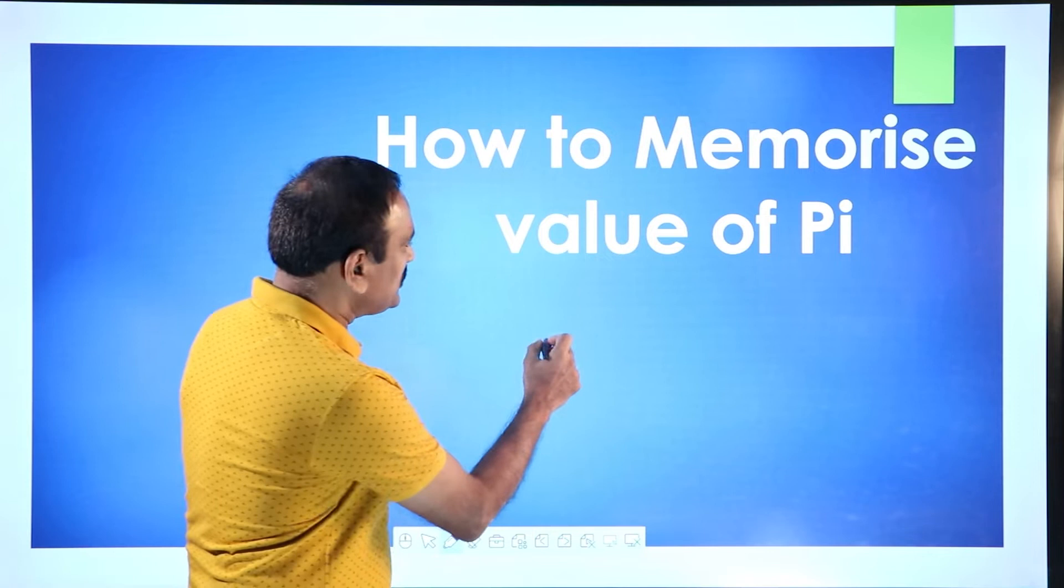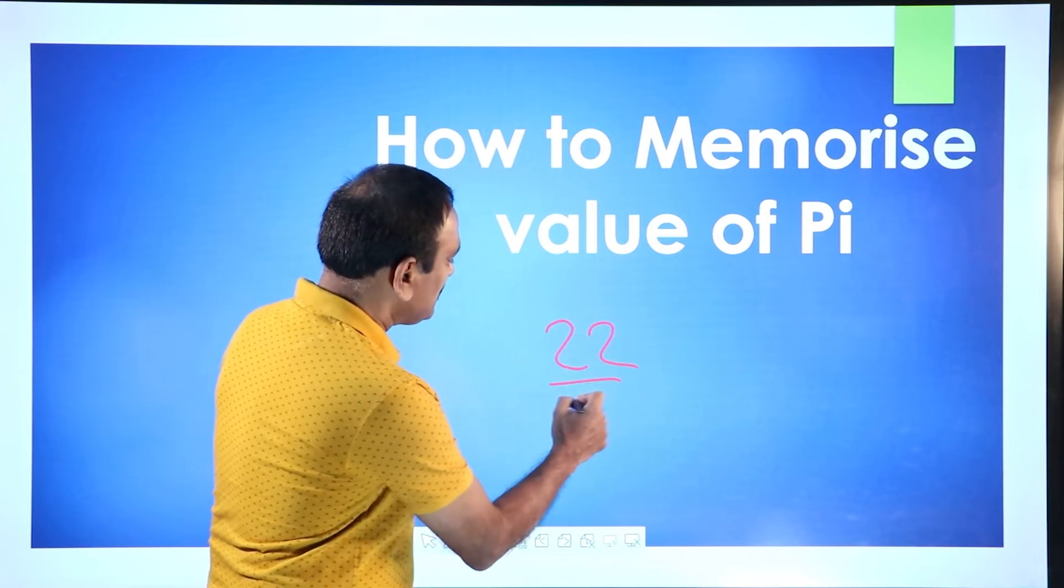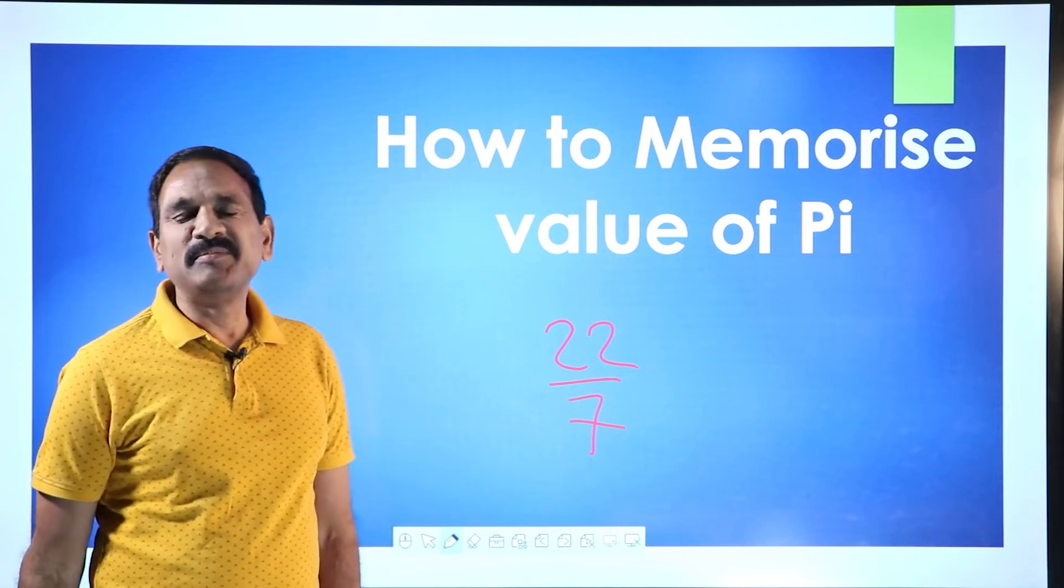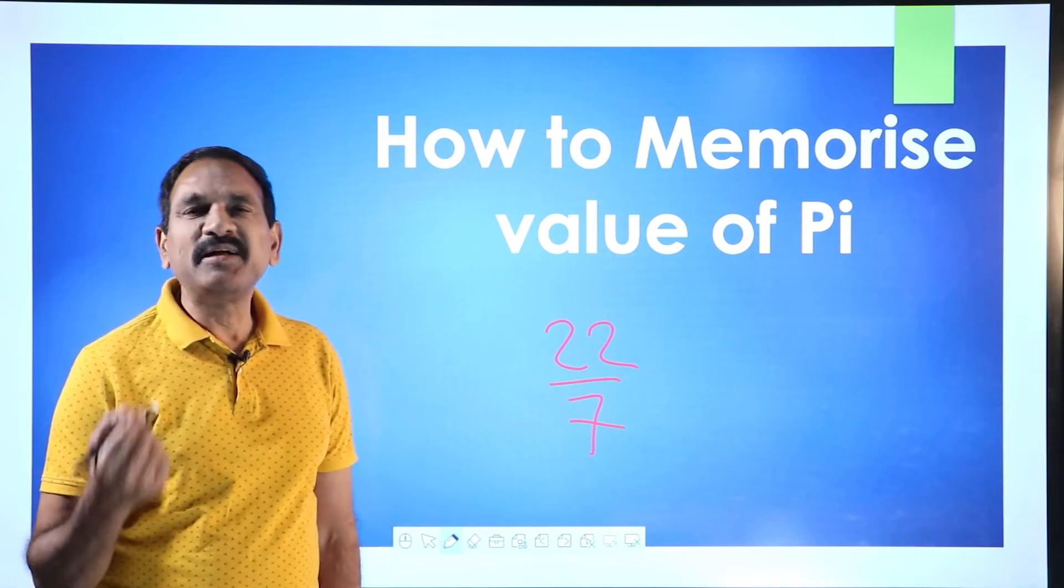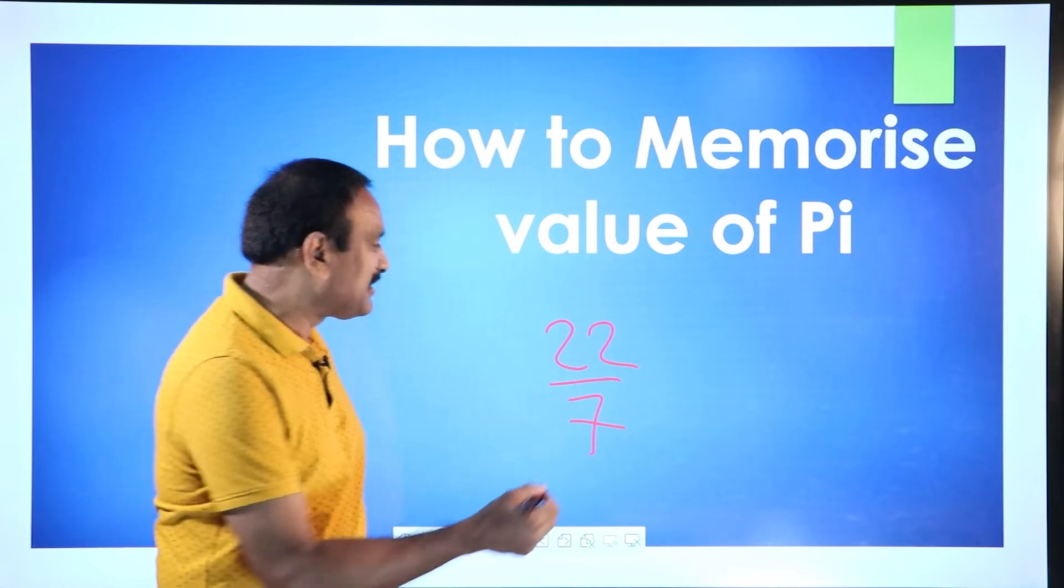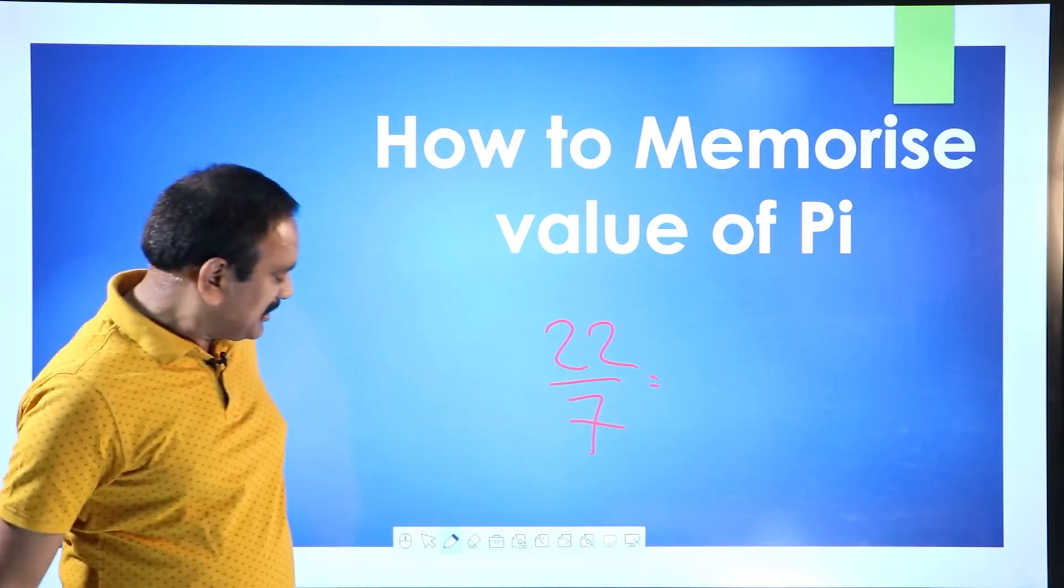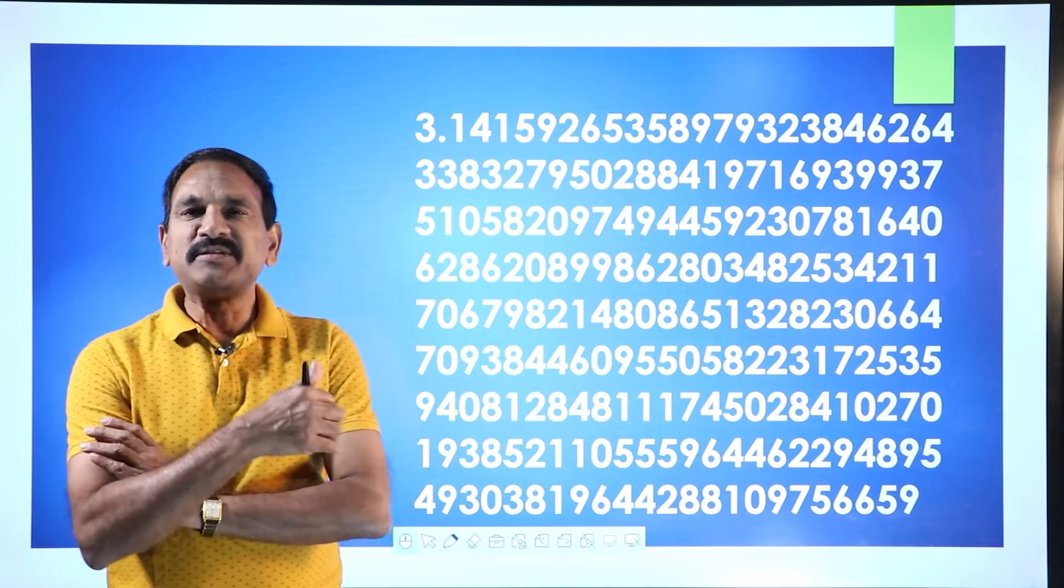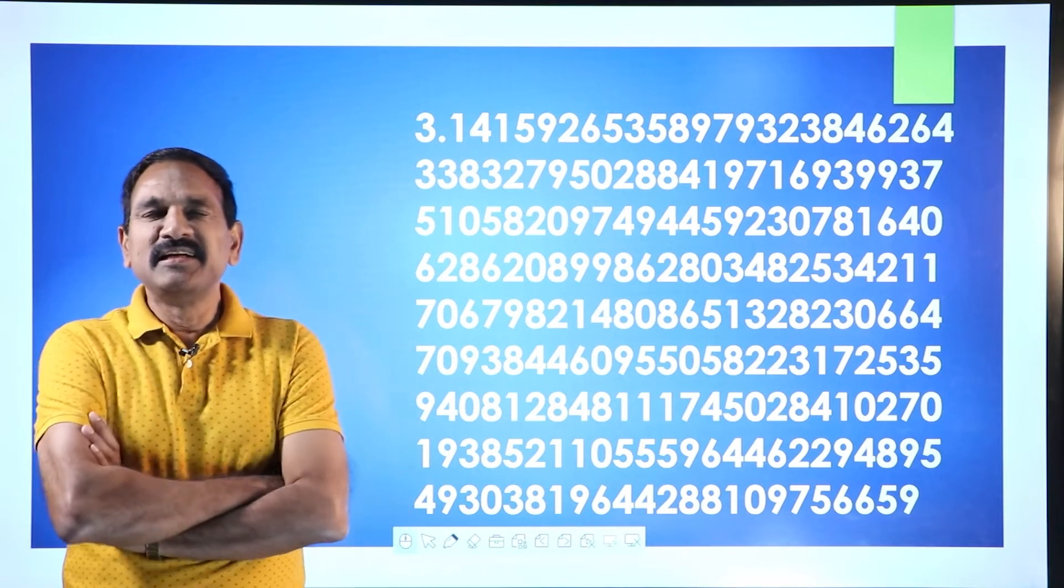Pi means 22 by 7. Circumference by diameter is an infinite number. You keep writing, you can keep on writing this number. If you look at this, how do you see this? This is the number. I am just giving you one thing now. I need to tell this number.